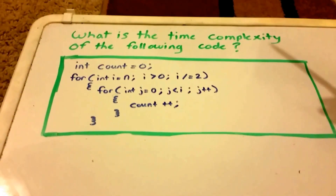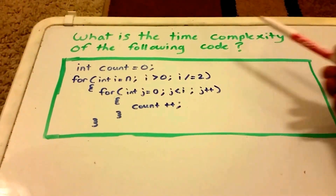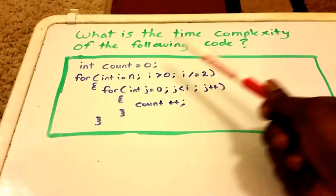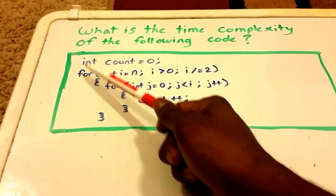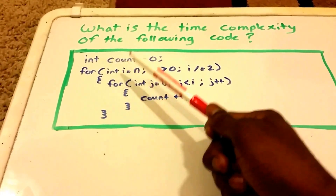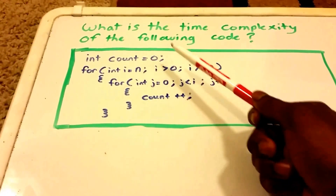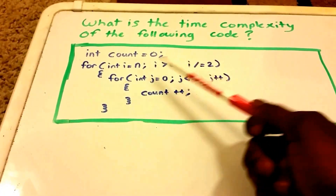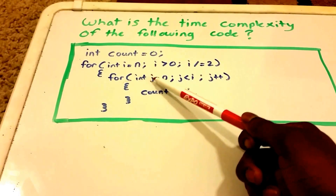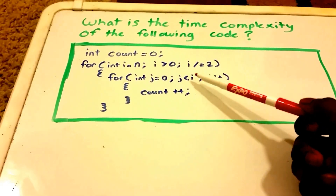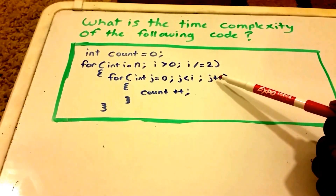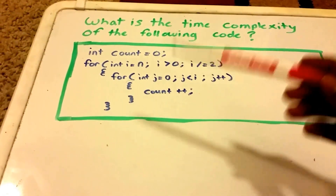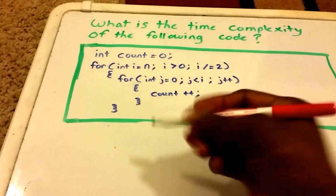I had this question in one of my comments: what is the time complexity of the following code? We have integer count equals zero, an outer loop for integer i equals n while i is greater than zero with i equals i divided by two, and an inner loop for integer j equals zero while j is less than i with j incrementing by one each time, and a counter variable that increments by one each time.